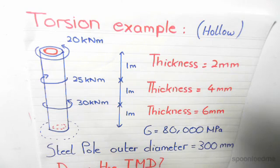The first point to notice is that the steel pole has an outer diameter of 300mm. This indicates that it's hollow because we have a different inner diameter for every section. We've got a shear modulus of 80,000 MPa.